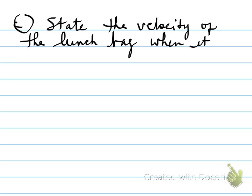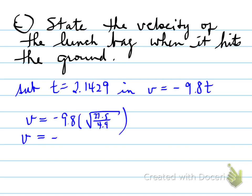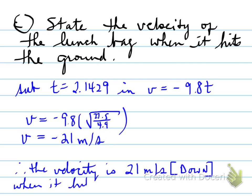Part C: state the velocity of the lunch bag when it hits the ground. We take what we got in part B and plug that into the velocity equation. We plug t equals 2.1429, or the exact value, into the velocity equation. If you plug in the exact value, you end up with an exact answer. The velocity is 21 meters per second downwards when it hits the ground.